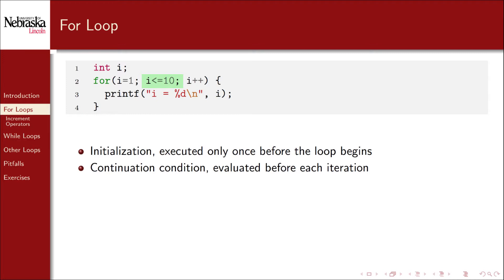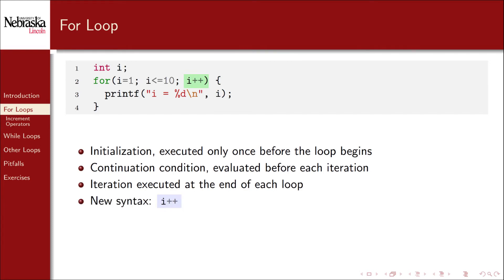Next is the continuation condition, which is evaluated before each iteration of the loop to determine if the loop should execute at least one more time. We'll continue this loop while the value of i is 10 or less, and terminate once i exceeds 10. The iteration statement is here, and it represents some new syntax we'll cover shortly — for now, understand that it simply adds 1 to the variable i. The iteration statement is executed at the end of each iteration.